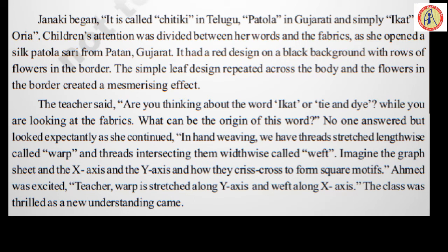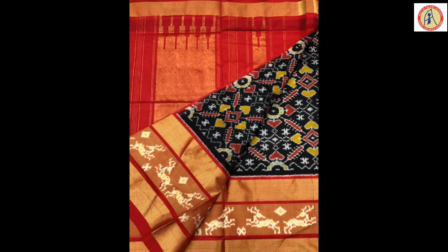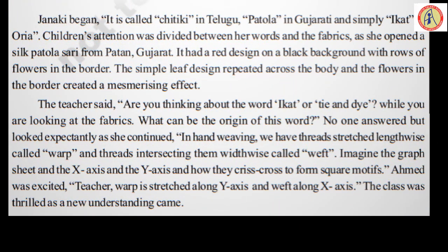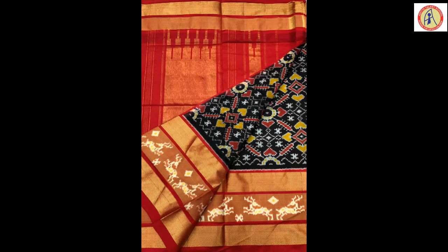Children's attention was divided between her words and the fabrics as she opened a silk Patola saree from Patan, Gujarat. It had a red design on a black background with rows of flowers in the border. The simple leaf design repeated across the body and the flowers in the border created a mesmerizing effect. The saree was from Patan in Gujarat, with a red design, black background, and rows of flowers in the border.